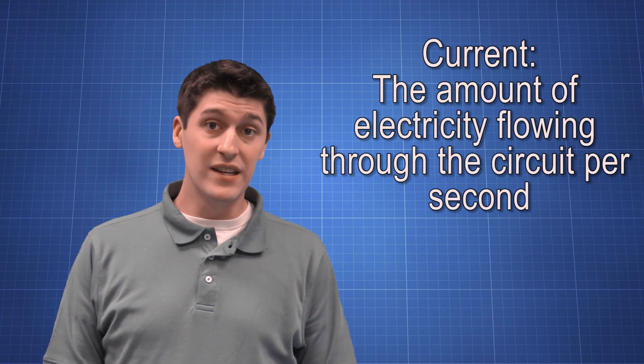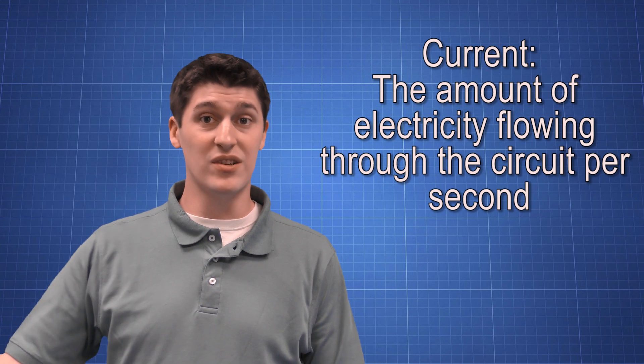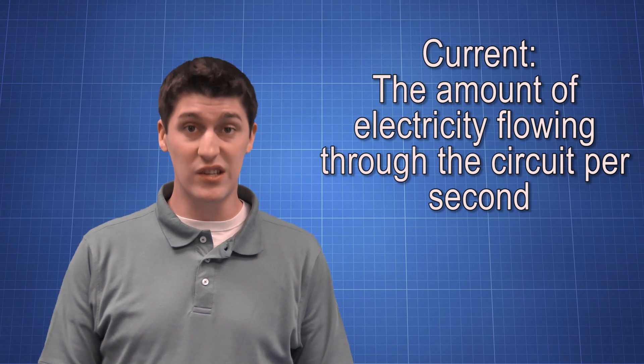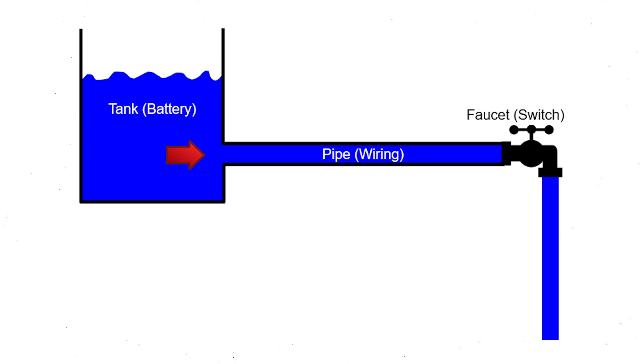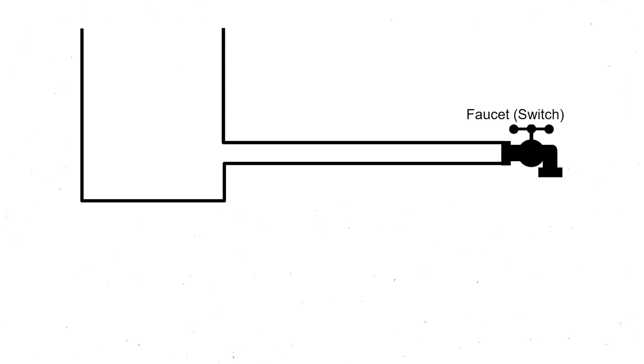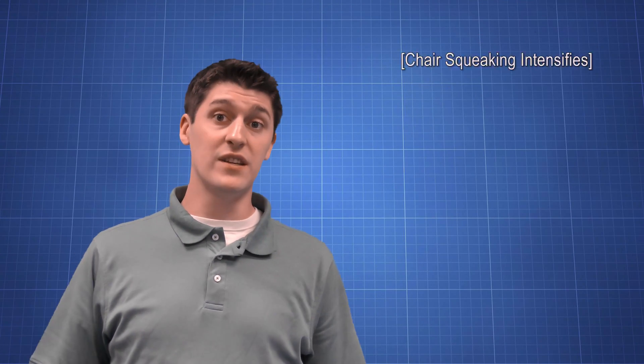If we continue to use water as an example, current is the amount of electricity that moves through a circuit per second. So current is like the amount of water that is flowing down a path. So if the tank is full, the current is going to be really high. If the tank is empty, there's no current. So if we turn off the water faucet, the current is off. There is no current flowing because it has nowhere to go. If the faucet is open, the current is free to move.